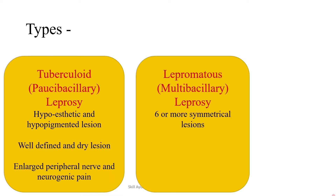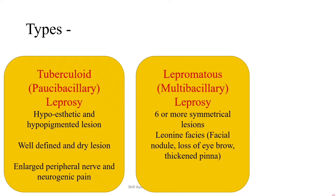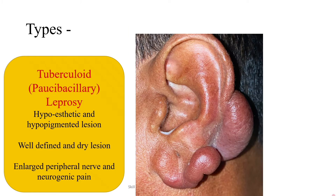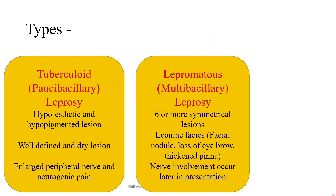In multibacillary lepromatous leprosy per WHO classification, six or more symmetrical lesions are seen. In paucibacillary, the serological test comes negative and the lesions are less than five, with nerve thickening seen. In multibacillary, the lesions are more and host immunity is less. Characteristic features of multibacillary lepromatous leprosy include leonine facies — facial nodules, loss of eyebrow, and thickened ear pinna. Nerve involvement occurs later in the presentation.